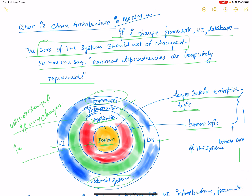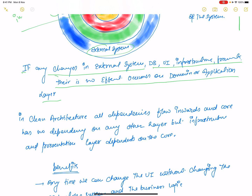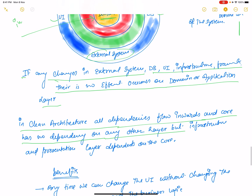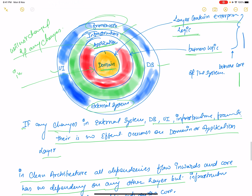If any changes occur in the external system, DB, UI, infrastructure, or framework, there is no effect on the domain and application layer. That is the definition of clean architecture. In clean architecture, all dependencies flow inward and the core has no dependencies on any other layer.